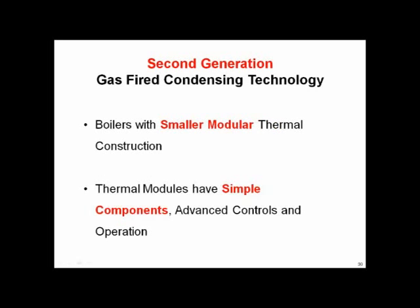Let's call these second-generation condensing boilers in the USA. All of this technology came from Europe. The second generation — the vast majority — has one heat exchanger, where originally they had a standard plus a condensing heat exchanger in two steps. These are smaller modules, the vast majority stainless steel. Controls are much simpler than they used to be, they can be staged together, and they're very reliable. First cost is coming down and highly competitive with non-condensing.